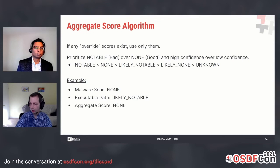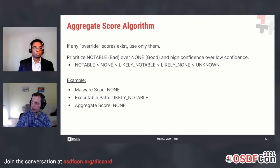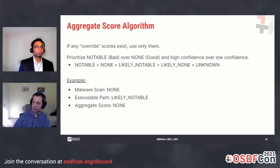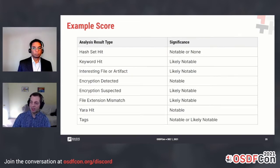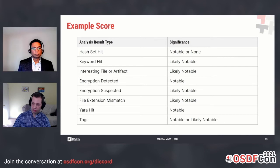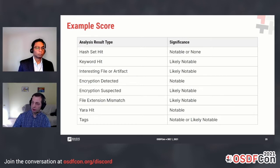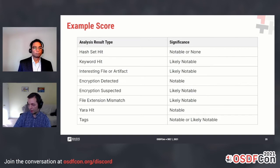For example, a file with two analysis results — a malware scan with a score of none, and an executable path analysis result of likely notable — has an aggregate score of none, because none is considered first over likely notable. Here are some example scores from ingest modules: a notable hash set hit gets a score of notable, a known hash set hit gets none. Keyword hits, interesting items, encryption suspected, and file extension mismatches get likely notable. Encryption detected and Yara hits get notable. Notable tags get notable, and all other tags get likely notable.